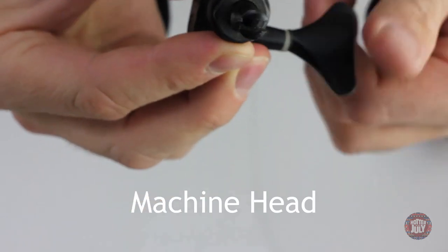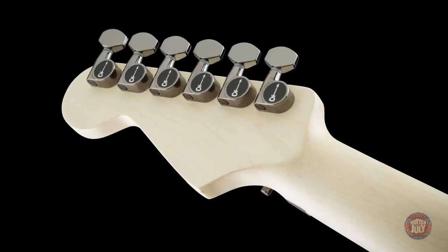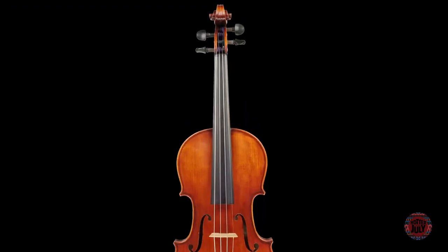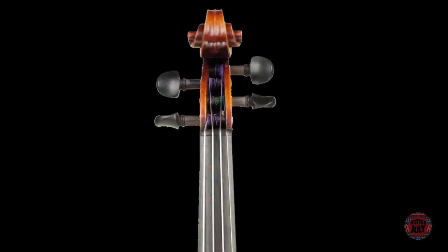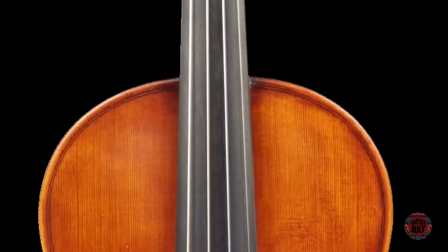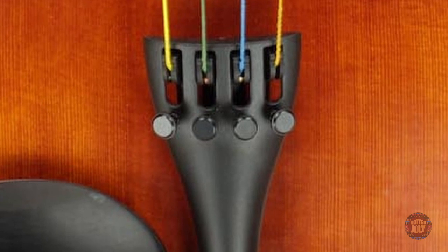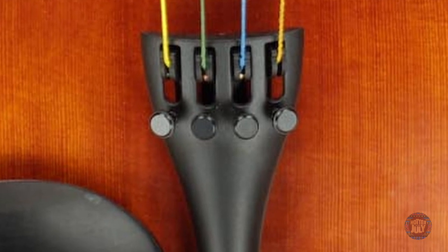Machine heads, as found on guitars, are a more convenient way of doing this, but take up more space. Tapered pegs, such as found on violins, use friction to stay in place, but are hard to fine tune, which is why violin family instruments have dedicated fine tuners, which are a type of screw that exerts downward pressure on the string to increase or decrease tension.